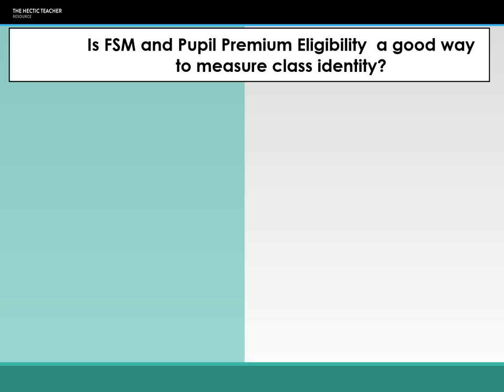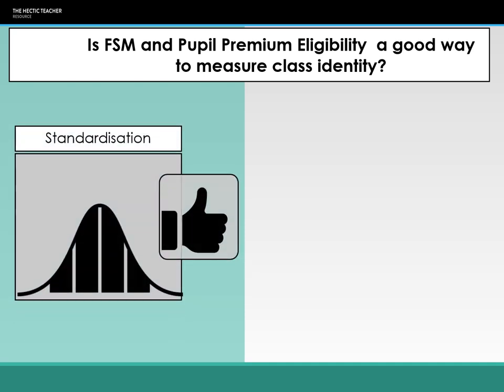One of the ways sociologists measure this is by looking at free school meals and pupil premium as a way of measuring advantage and disadvantage. Some would argue this is effective because it creates standardisation — it gives an equal measure across populations. Everyone is measured by the same standard. Those eligible for free school meals have a household income under £16,000 a year, regardless of where you live, your ethnicity or status.